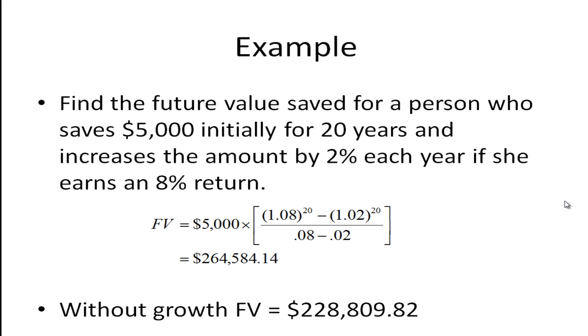This is sort of a classic case of someone starting their career. They can only afford to save five thousand dollars a year in their 401k but they know they're going to get some pay raises every year and every time they get a pay raise they're going to increase the amount they put in by two percent and in this case they're going to earn an eight percent return. So if we substitute into that equation, 1.08 raised to the 20th power minus 1.02 raised to the 20th power divide all of that by 0.08 minus 0.02, we get $264,584.14.